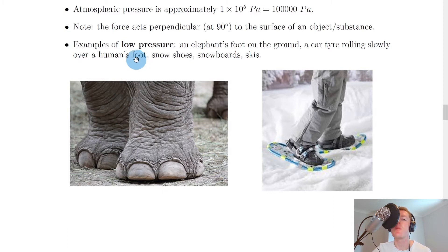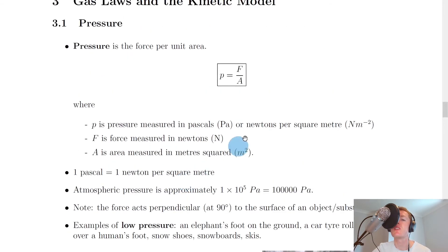Some examples of low pressure to begin with might be things like an elephant's foot on the ground. You can see here the elephant's foot is huge, which means that the force due to their weight acting on the ground is going to be spread over a large area, which will reduce the pressure. So the bigger the area, the smaller the pressure, and we can see that from this equation here.